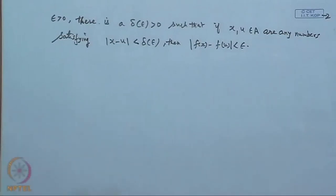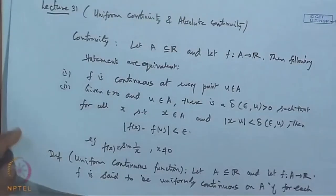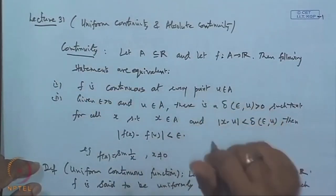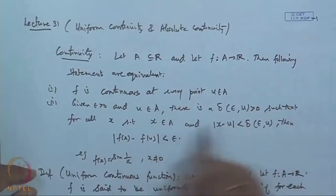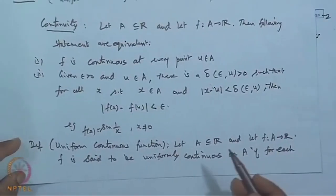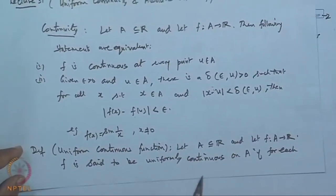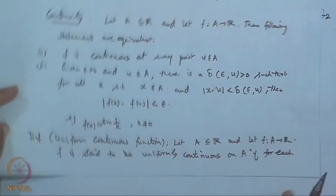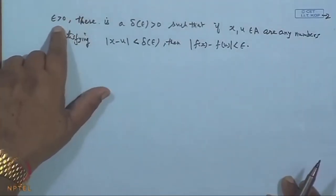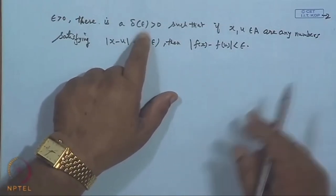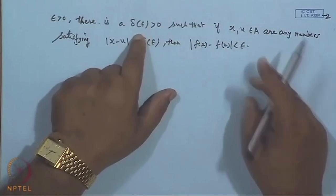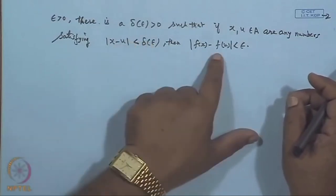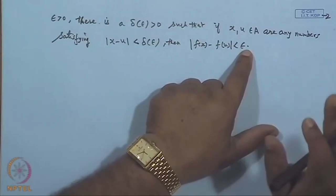What this shows is that a function is said to be uniformly continuous over the set A. Remember, when we say the function is continuous, we say it is continuous at a point. But when we say the function is uniformly continuous, saying 'uniform continuous at a point' is meaningless — it is continuous over a set. So a function is uniformly continuous over the set A means: for any epsilon greater than 0, we can find a delta independent of all points of A such that for any two points within delta of each other, the fluctuation f(x) minus f(u) remains less than epsilon.